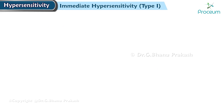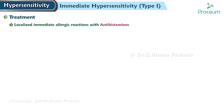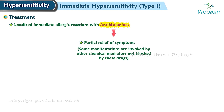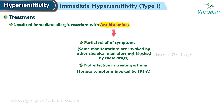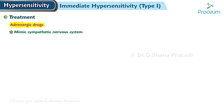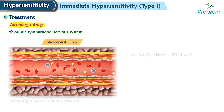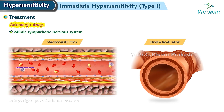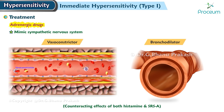Now we're going to talk about the treatment of immediate hypersensitivity. Treatment of localized immediate allergic reactions with antihistamines often offers only partial relief of the symptoms, because some of the manifestations are invoked by other chemical mediators not blocked by these drugs. For example, antihistamines are not particularly effective in treating asthma, the most serious symptoms of which are invoked by SRSA. Adrenergic drugs, which mimic the sympathetic nervous system, are helpful through their vasoconstrictor and bronchodilator actions in counteracting the effects of both histamine and SRSA.